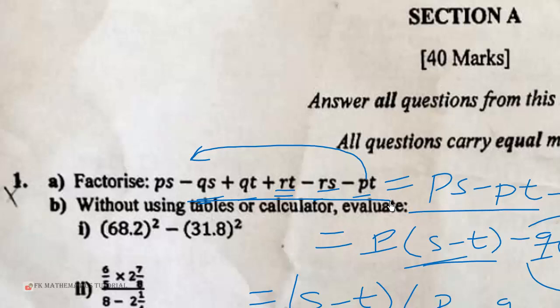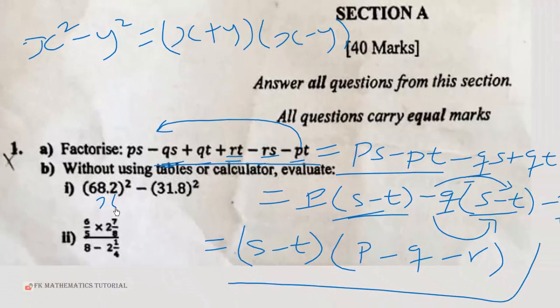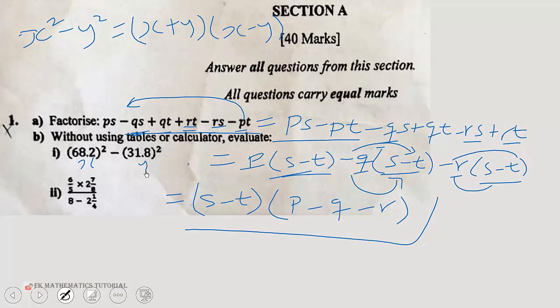So the b(i) part, without using tables or calculator, evaluate (68.2)² - (31.8)². So with this one, recall that x² - y², difference of two squares, is equal to (x + y)(x - y).